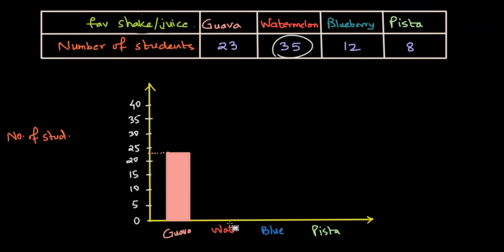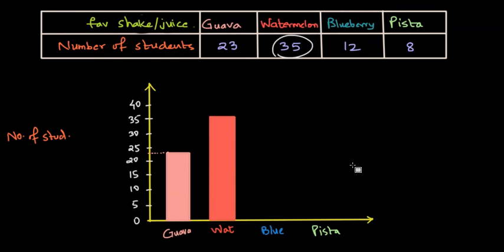The height for the watermelon bar will be 35, which will exactly correspond to the mark of 35. Let's plot it in this reddish color. So this is how the bar will look like. Let me color it like this.